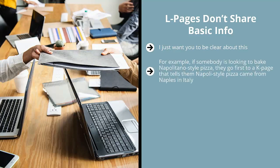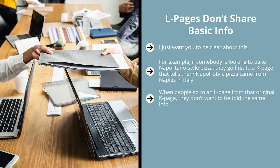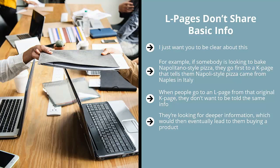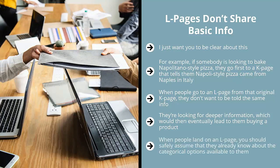For example, if somebody is looking to bake Neapolitan style pizza, they go first to a K page that tells them Napoli style pizza came from Naples in Italy, was brought by Italian immigrants to the United States, and is a very tasty, puffy form of pizza. When people come to an L page from that K page, they don't want the same info — they already know the background. Now they want specifics, like how not to burn their Napoli pizza and what tools are available. They're looking for deeper information. Don't waste their time rehashing basics — it erodes your credibility.